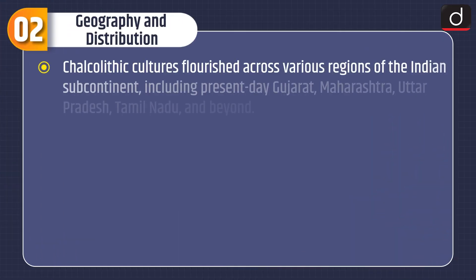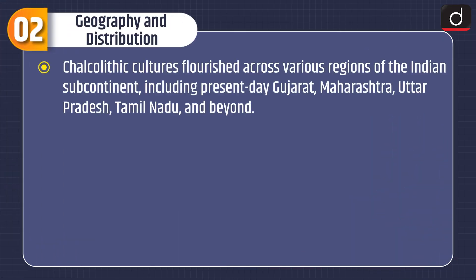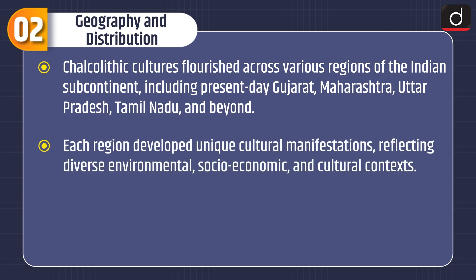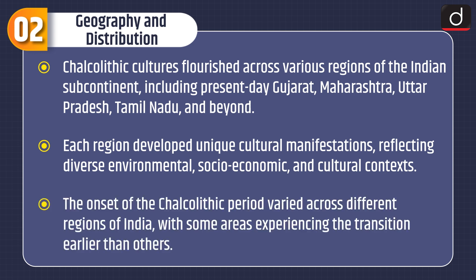Moving on to geography and distribution, Chalcolithic cultures flourished across various regions of the Indian subcontinent, including present-day Gujarat, Maharashtra, Uttar Pradesh, Tamil Nadu, and beyond. Each region developed unique cultural manifestations reflecting diverse environmental, socio-economic, and cultural contexts. The onset of the Chalcolithic period varied across different regions of India, with some areas experiencing the transition earlier than others.